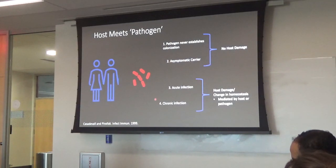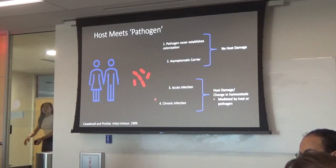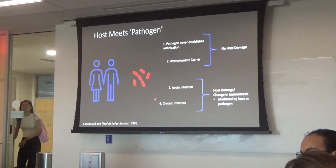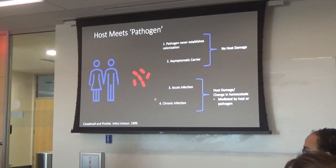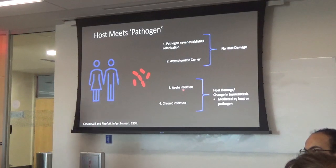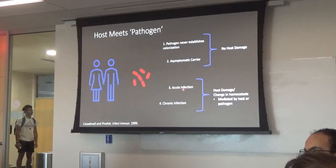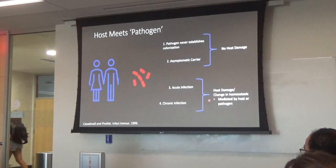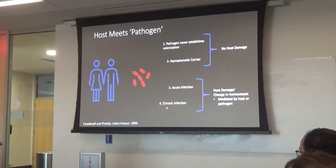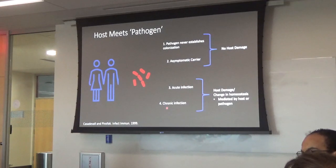The microbe could find a place to live within the host without causing damage, making the host an asymptomatic carrier. Or, more commonly, you have an acute infection where you pick up a microbe, it makes you sick, your immune system ramps up, clears the infection, and you return to homeostasis. Or a chronic infection where symptoms wax and wane but you're not able to clear the infection completely — tuberculosis or syphilis are examples.